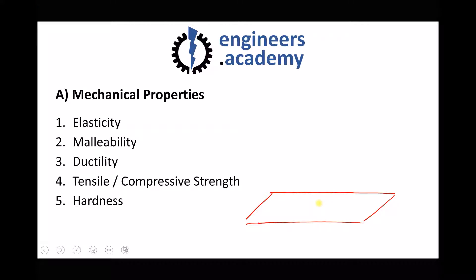One test for hardness places a ball bearing of known size on a piece of material and applies a known load to it, measuring the indentation left after the test. A hard material will leave a relatively small indentation with the same force and ball bearing, whereas a soft material would leave a much larger indentation — and this also applies to scratching of the surface.